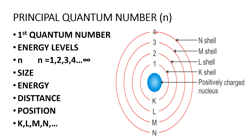Principal quantum number is the first quantum number. It explains the concept of energy levels, shells, or orbits. It is represented by the symbol small n. The values of principal quantum numbers are 1, 2, 3, 4, 5, 6, and so on. It provides information about the size and energy of the orbit, and indicates the distance and position of the electron in an atom. These energy levels are designated as K shell, L shell, M shell, and N shell. K shell is smaller in size, so it has lower energy, but N shell is larger in size, so it has higher energy.